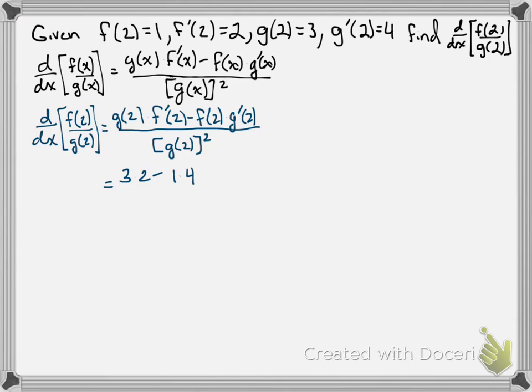Those are multiplication symbols there in case you can't see them. All over, we said g of 2 was 3, so all over 3 squared. And now it's just a matter of calculating this number. So we have 6 minus 4 over 9, or 2 ninths.